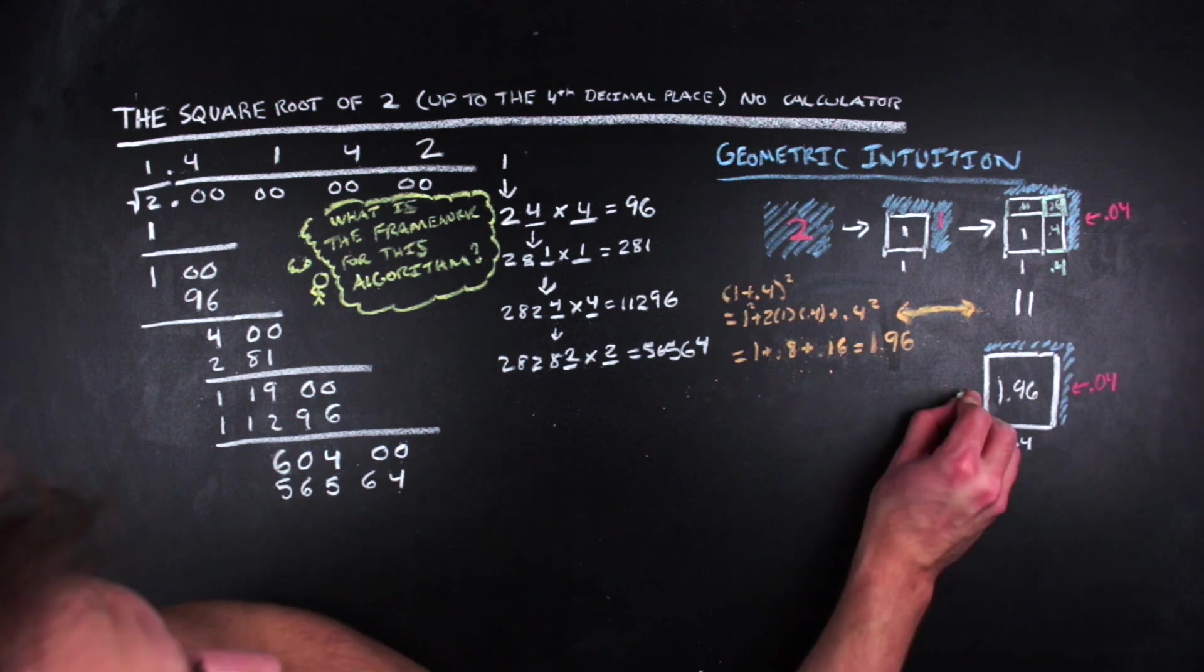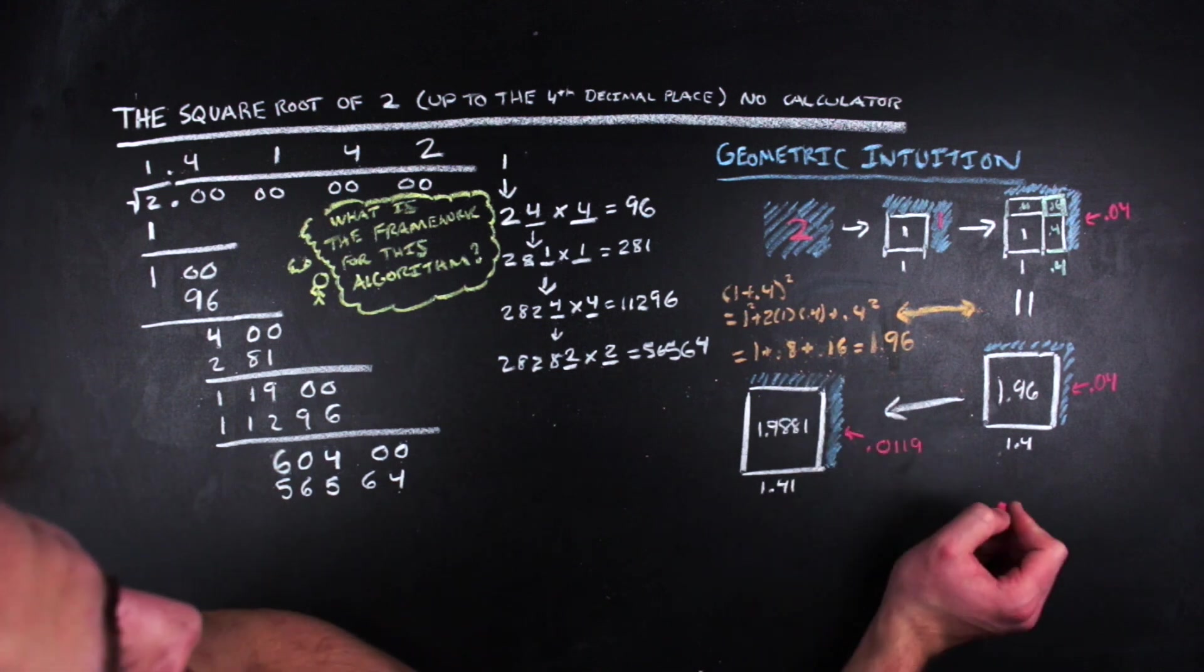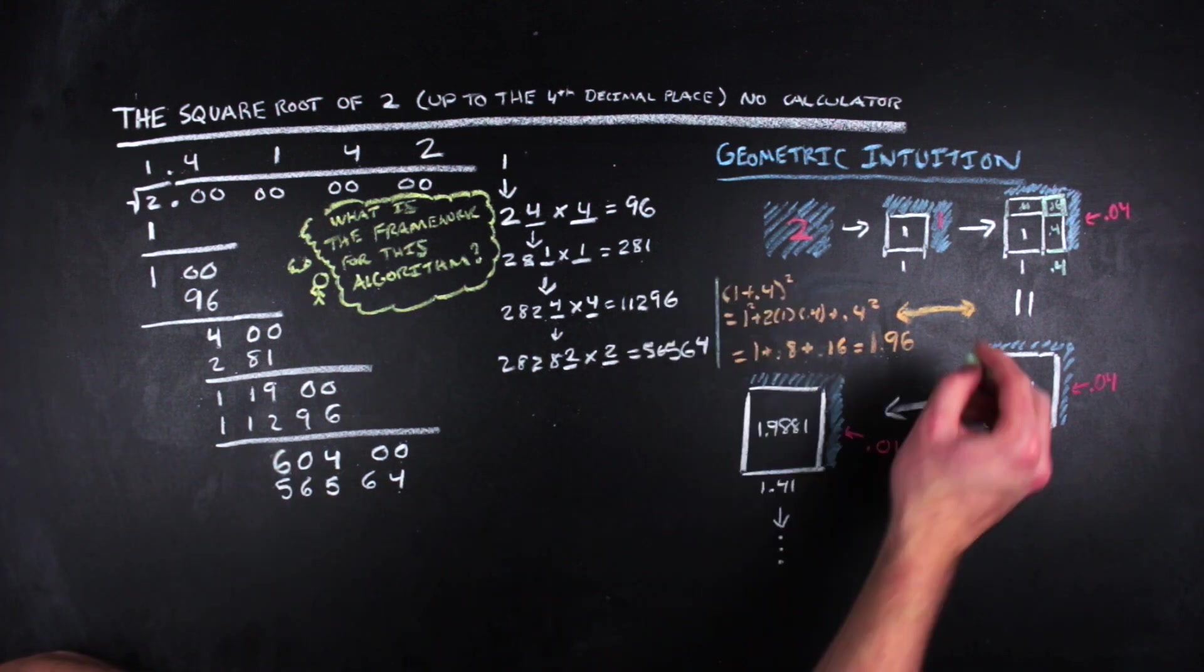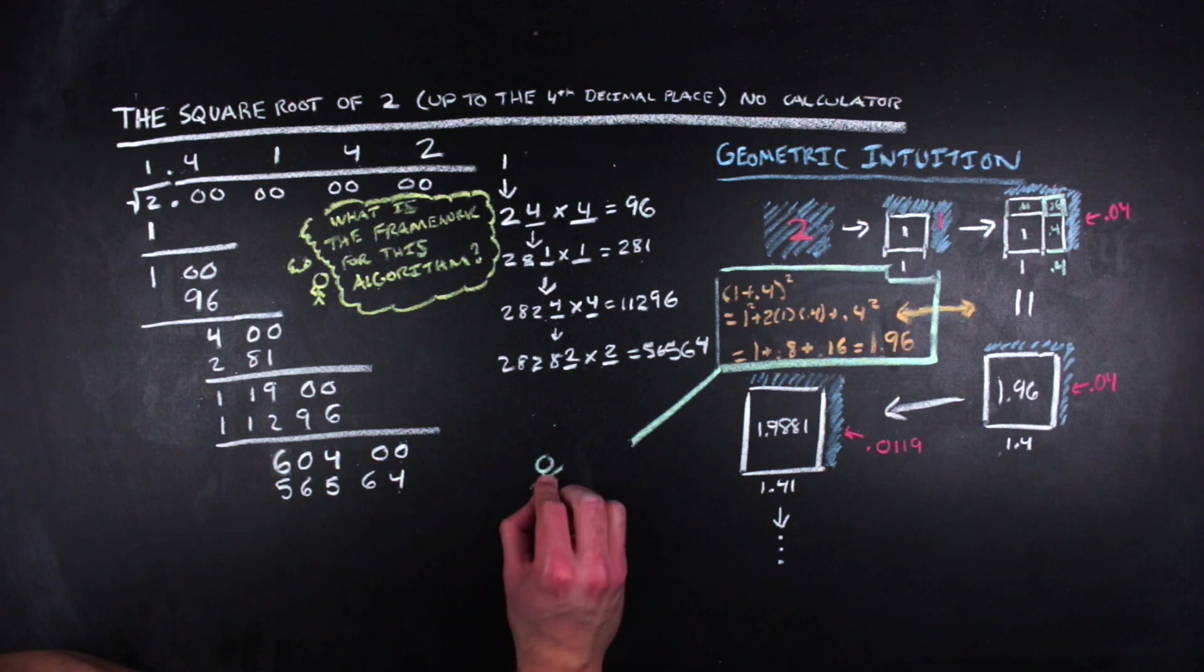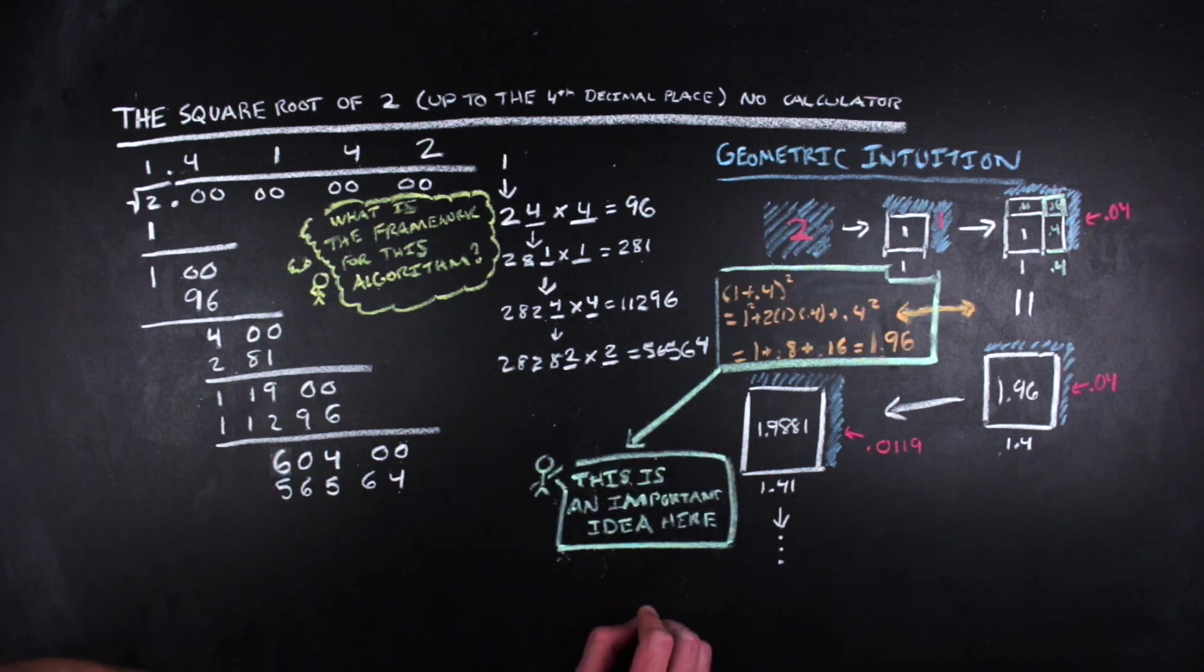And this geometric process continues by adding on smaller and smaller lengths to measure out the rest of the area. The binomial expansion bit that we gave a nod to is going to be really important as we move into the more general square root algorithm. Okay, so at this point in the video, depending on your choices previously, we have either gone through a sample of computation or not, or we have gone through the geometric motivation or not. But let's go ahead and break down the algorithm.